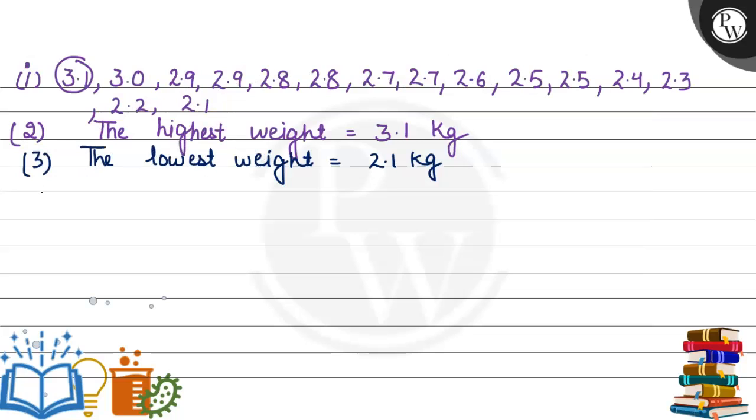Determine the range. Range equals highest term minus lowest term. In this question, our highest weight is 3.1 minus lowest term 2.1, so you will get 1.0 as the range.